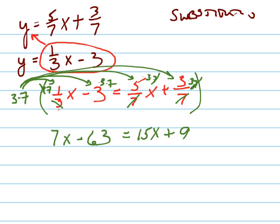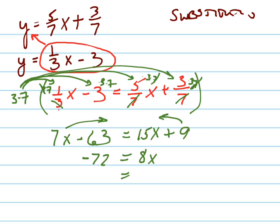Much easier problem to solve now that you don't have any fractions to deal with. Now to solve this, we isolate the variable. Let's keep the x's positive and move them to the right side. 15x minus 7x is 8x. Then let's move the 9 over to the left side — negative 63 minus 9 is negative 72. Now divide both sides by 8, and you get negative 9. That's your x value.